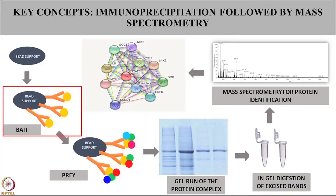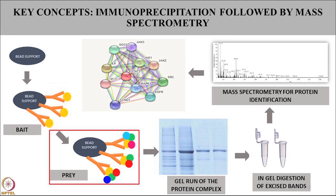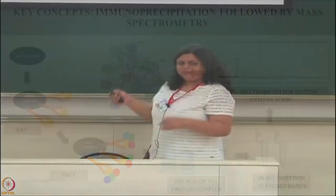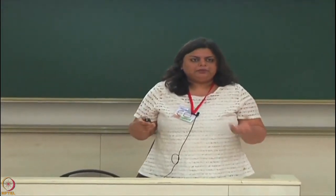This is the basic workflow. We will have a bead support — majorly people use Sepharose beads or agarose beads with Protein A or Protein G immobilized, because Protein A or G will bind to the Fc region of the antibody. You conjugate your antibody and then incubate the bead-antibody conjugate overnight so that from your lysate you can trap the protein of interest. We will take STAT3 as a case study — STAT3 is part of the JAK-STAT pathway — and we are interested in finding which proteins are potential interactors of STAT3.